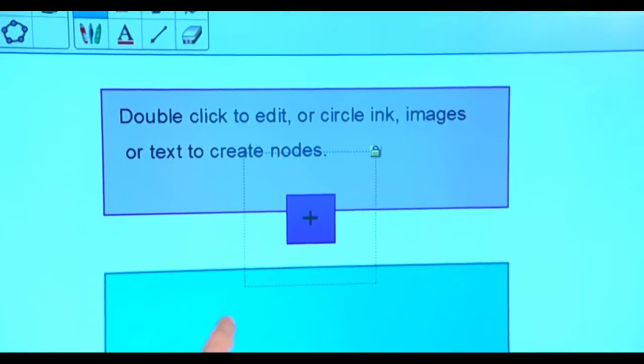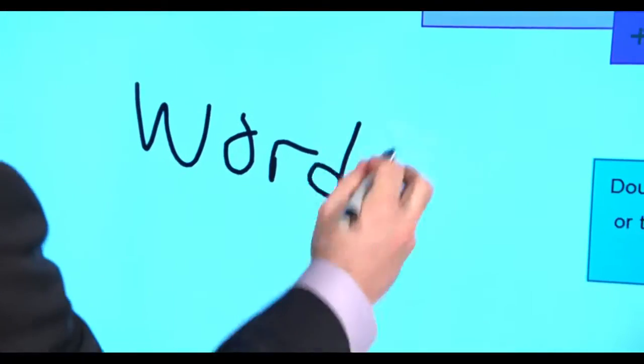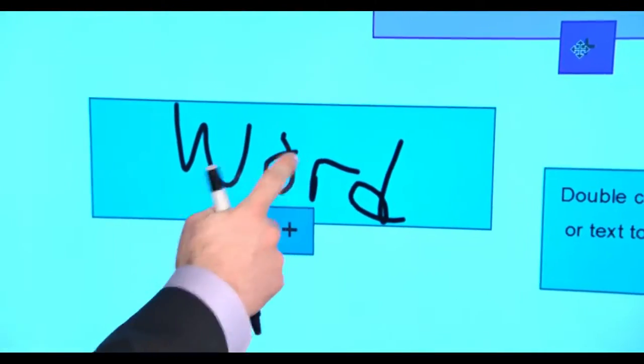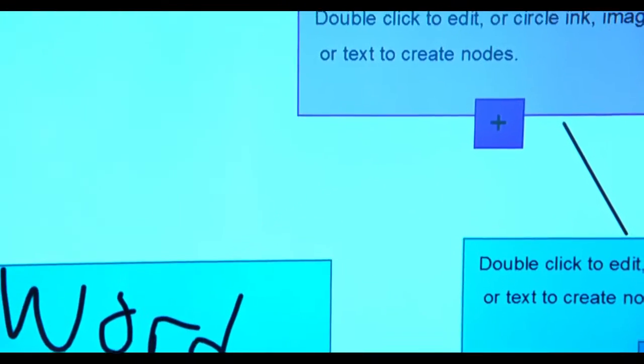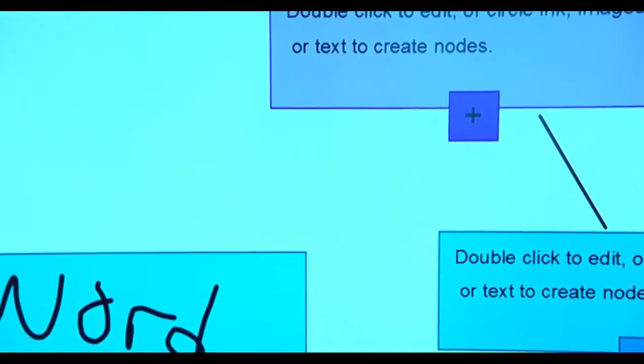Adding new nodes is as simple as hitting the plus sign or simply writing a word and drawing a circle around it. Managing connections between nodes is easy by drawing a line to add a connection or simply erase the line to remove it.